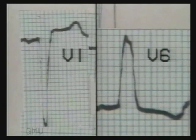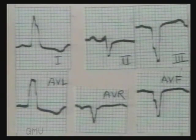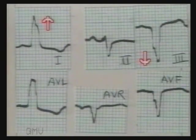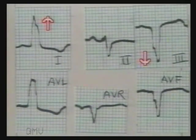Note that the T-waves are opposite in direction to the QRS complexes. Now let us see the limb leads — there is left axis deviation. The changes of left-sided leads V5 and V6 are also seen in leads I and AVL, which are basically left-sided leads.